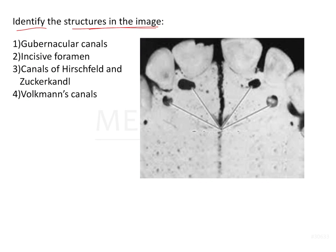Identify the structures given in this image. Here we see holes present on the lingual surfaces of the deciduous incisors and we have been asked to identify these structures. These structures are actually the gubernacular canals. Gubernacular canals are seen with those deciduous teeth that have a permanent successor.